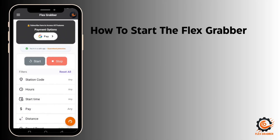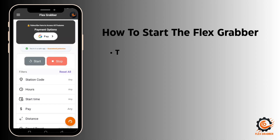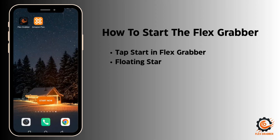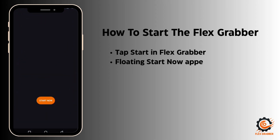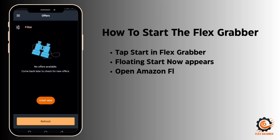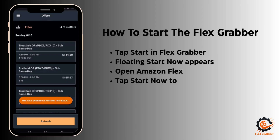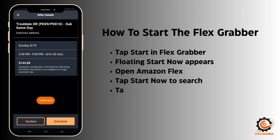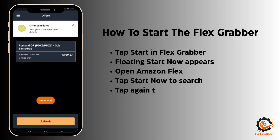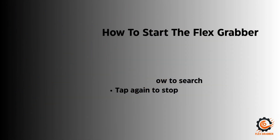Now we'll learn how to start the Flex Grabber app. Tap Start in Flex Grabber and a floating Start Now button appears. Open Amazon Flex and tap Start Now to begin searching. Flex Grabber will grab blocks based on your filters. Tap the button again to stop.